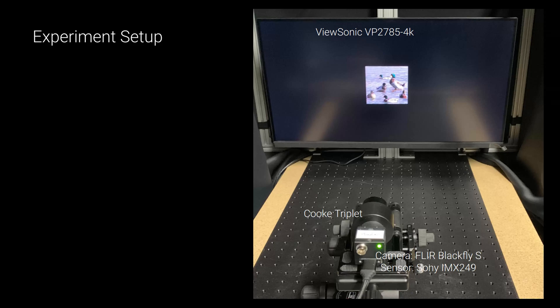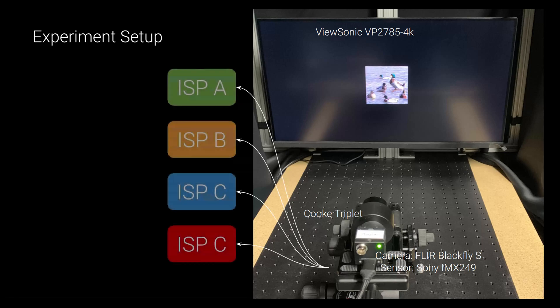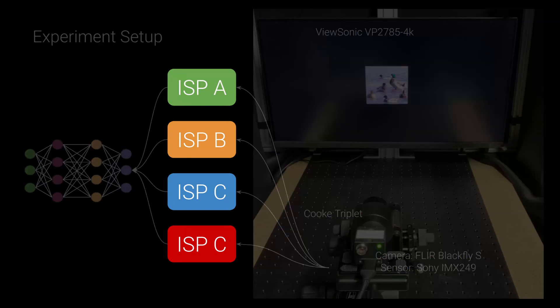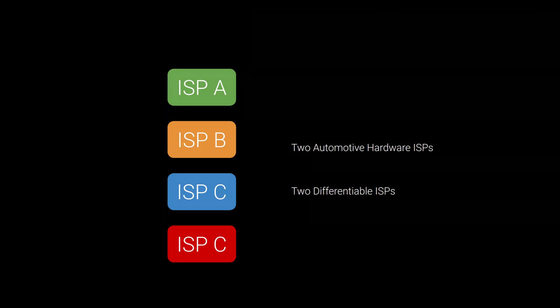To validate our method, we display the images on the ViewSonic monitor and capture the raw signals with a FLIR camera that employs a Sony IMX249 sensor. The raw image will be processed by four different ISPs before going through the classifier. In our experiment, we use two automotive hardware ISPs and two differentiable ISPs.